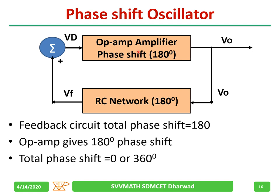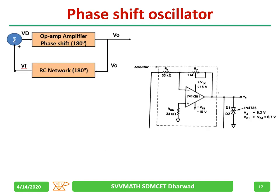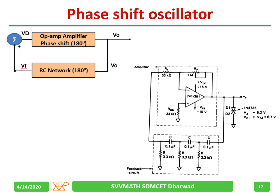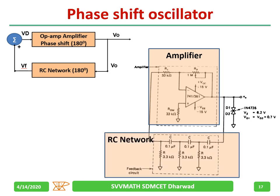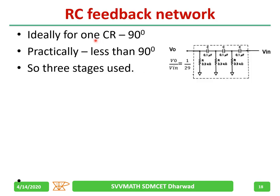For the phase shift oscillator, we use an op-amp as amplifier in inverting mode, which gives 180° phase shift. An RC network is used in the feedback, which gives another 180° phase shift. Total becomes 360°. Ideally one RC stage gives 90°, but practically less than 90° is achieved. Therefore, a minimum of three stages of R and C are needed to get 180° phase shift.